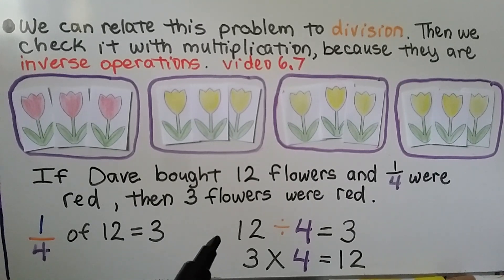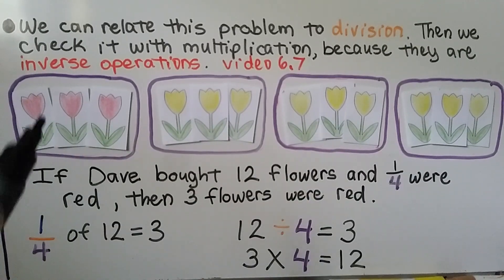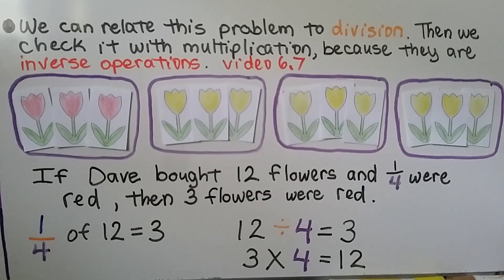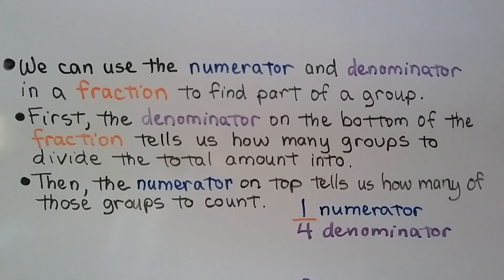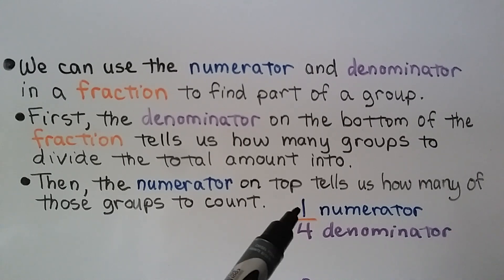And twelve divided by four is equal to three. We had twelve flowers. We divided it into four groups — there were three in each group. We can check it with multiplication: three times four is equal to twelve, so we know we have it right. We can use the numerator and denominator in a fraction to find part of a group. The denominator on the bottom tells us how many groups to divide the whole amount into. Then the numerator on top tells us how many groups to count, or how many are in that one group.